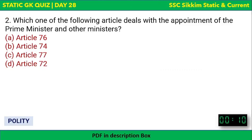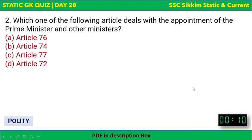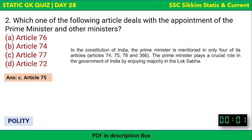The second question: which one of the following articles deals with the appointment of the Prime Minister and other ministers? The options are Article 76, Article 74, Article 77, and Article 72. The correct answer is Article 75.